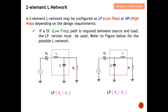If a DC or low frequency path is needed between source and load, the low pass version must be used. There are two possible low pass L network configurations. Which one to use depends on the values of RS and RL. For the configuration with series L and shunt C, this is used when RL is greater than RS.